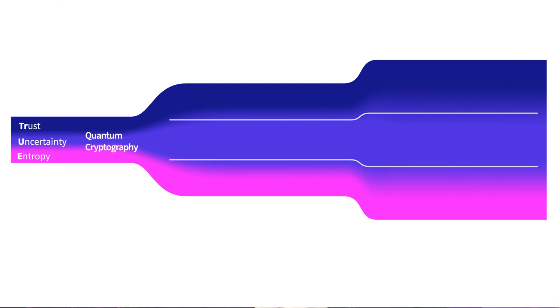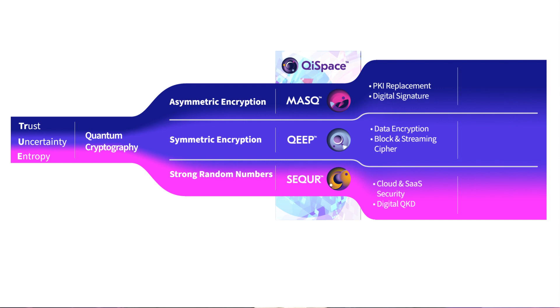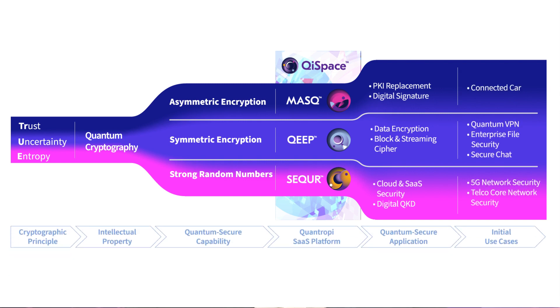The Kitspace platform provides three cryptographic solutions. First is Kitspace MASK, our quantum-secure asymmetric algorithm. Quantropy also provides Kitspace KEEP, our quantum-secure symmetric algorithm derived from quantum permutation pads that outperforms AES-256. And Kitspace Secure is our quantum random number generation and distribution service.